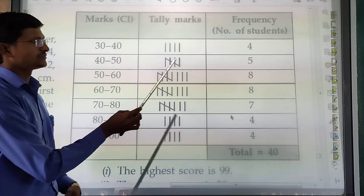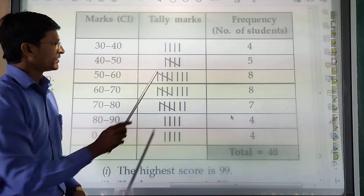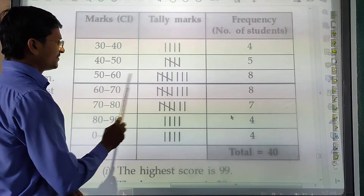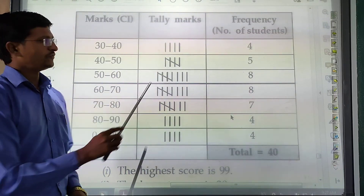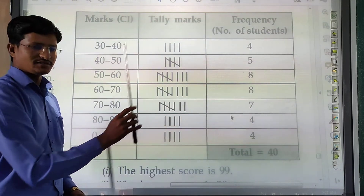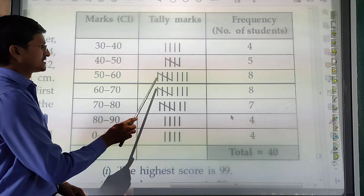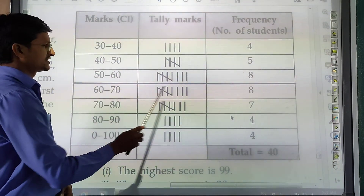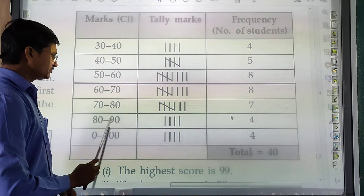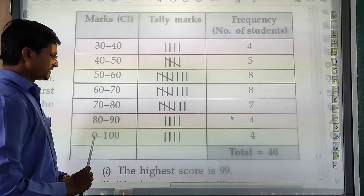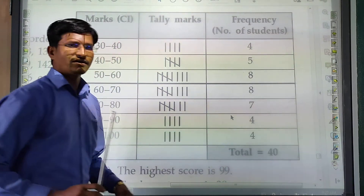Counting the students: 30–40 has 4 students, 40–50 has 5 students, 50–60 has 8 students, 60–70 has 8 students, 70–80 has 7 students, 80–90 has 4 students, and 90–100 has 4 students. The total number of students is 40.